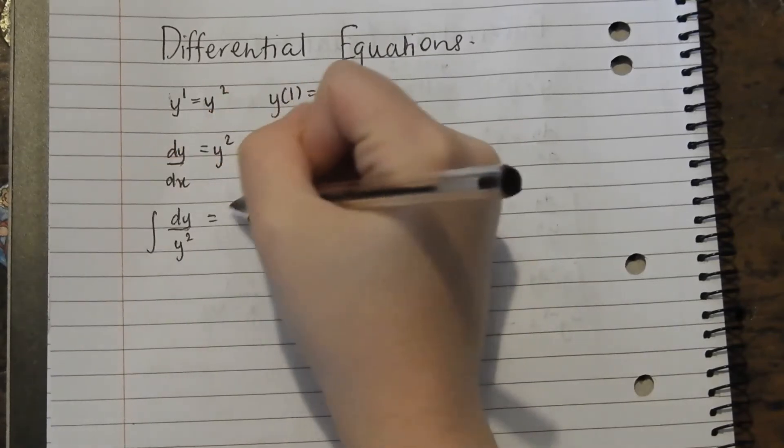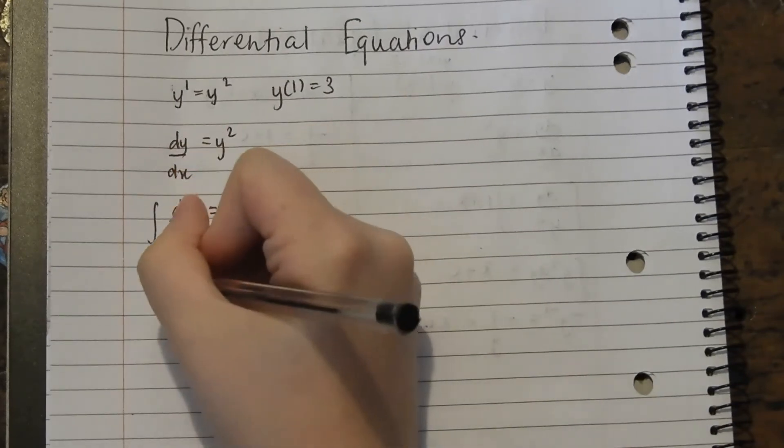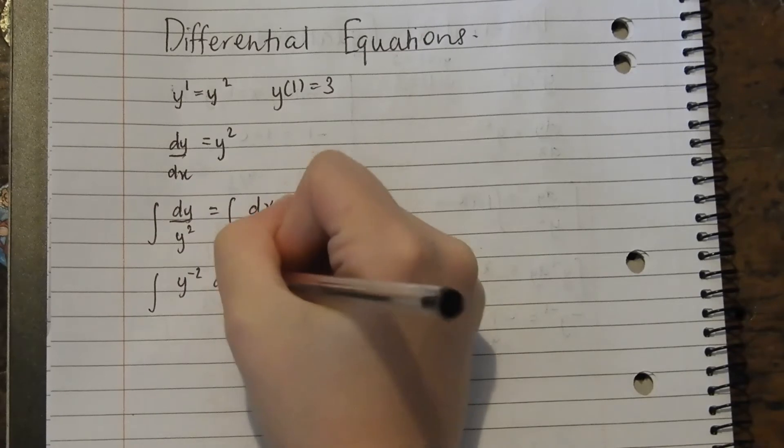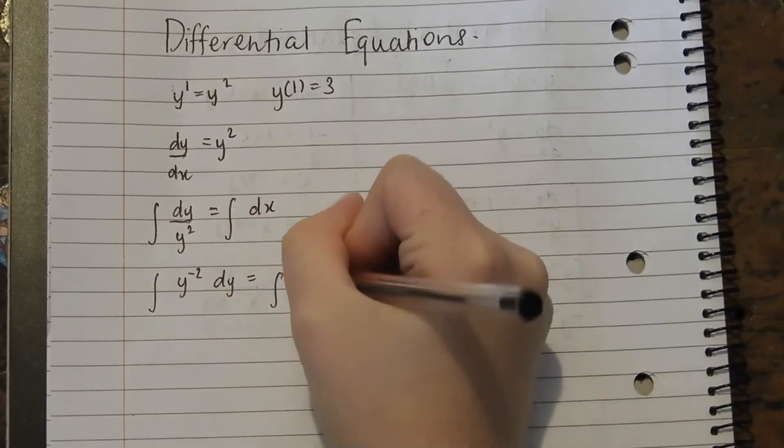Now we want to take the integral of both sides. So this integral is also equivalent to integral y to the negative 2 dy equals integration dx, and there's a 1 in there.